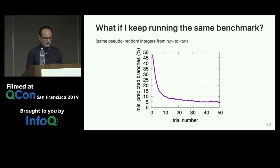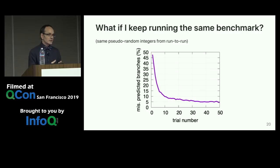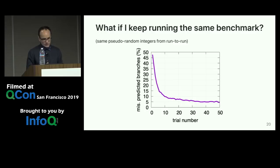Another fact: sometimes by adding a branch you can worsen branch prediction elsewhere. Lots of processors predict branches based on history. Adding a branch makes the history more complicated to learn, so it can worsen other predictions even if the new branch you introduced is itself predictable. Branches can have bad effects that are not so easy to measure.